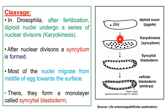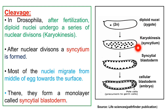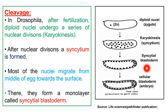In Drosophila, after fertilization the diploid nucleus or zygote undergoes a series of nuclear divisions or karyokinesis. After nuclear division, a syncytium is formed — a stage of multiple nuclei in a single cell. Most of the nuclei migrate towards the surface of the egg from the middle portion to form a monolayer called the syncytial blastoderm. Later, the plasma membrane encloses each nucleus, converting the syncytial blastoderm into the cellular blastoderm or embryo.